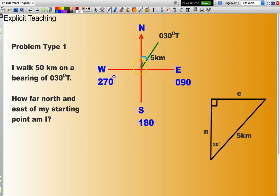And the question is basically asking how far north? In other words, I'll make a right angle triangle. Not quite a straight line. And how far north have I travelled? Well, what is that distance there? And how far east? What is that distance there?